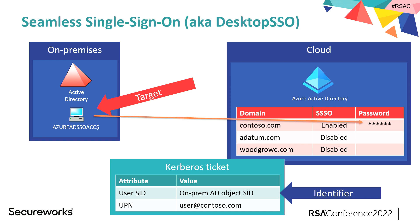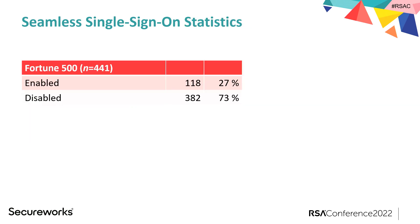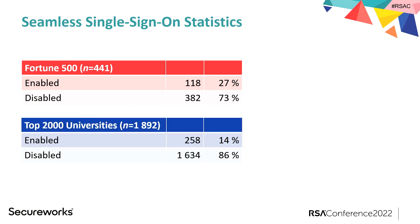How many Fortune 500 organizations are using seamless single sign-on? Microsoft actually recommends using this, but only about a third are using it, and from universities it's about half of that. It was interesting that there's an average of 66 domains per Fortune 500 organization, with one organization having 2,030 domains.